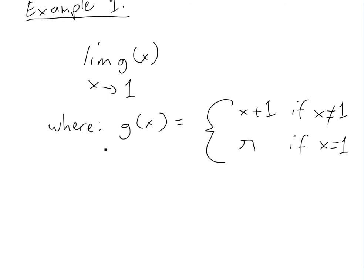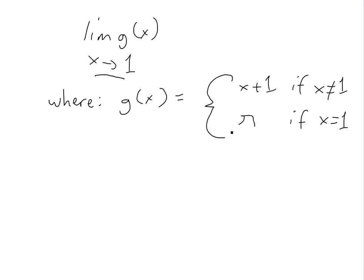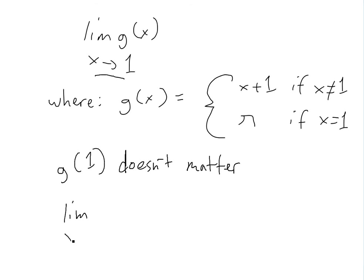Recall from the limit laws, it doesn't matter what the actual value is at x equals one — all we want to know is what the value approaches. So g of one doesn't matter here. All we have to do is look at when x is not equal to one. We take the limit as x approaches one of x plus one, and using direct substitution, we plug in one: one plus one equals two. So the limit is two.